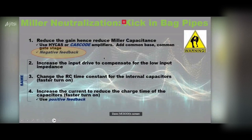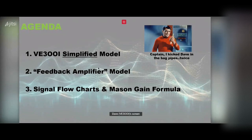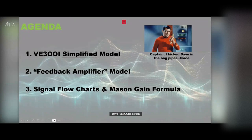In the last presentation I gave options on how to neutralize the Miller effect, including Cascode amplifiers and negative feedback. Here I'm going to dive deeper into the negative feedback amp and provide three models for analysis. The first is my simplified model. The second and third I'll briefly touch on: the textbook university feedback amplifier approach, and the one I found most intriguing — signal flow charts and the Mason gain formula — which I'll just introduce and spend about a minute discussing.